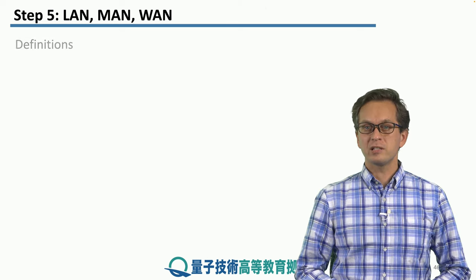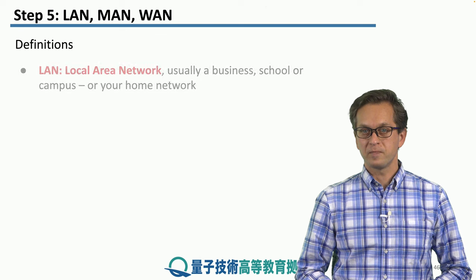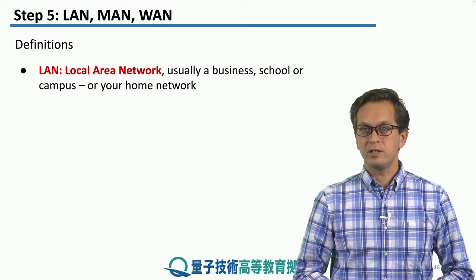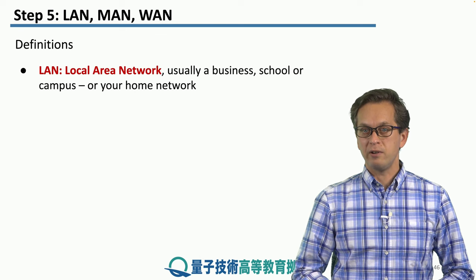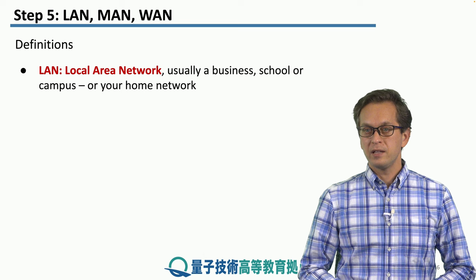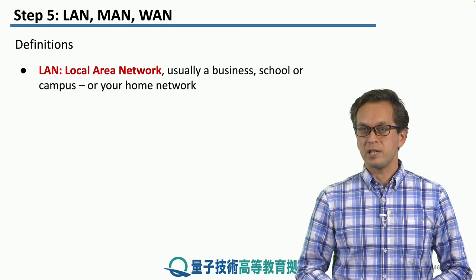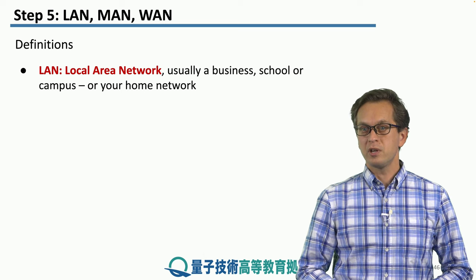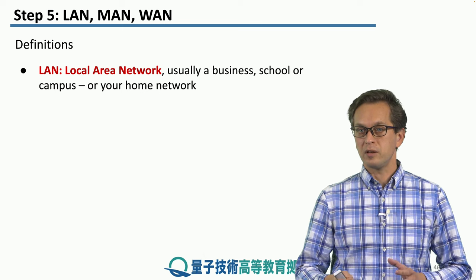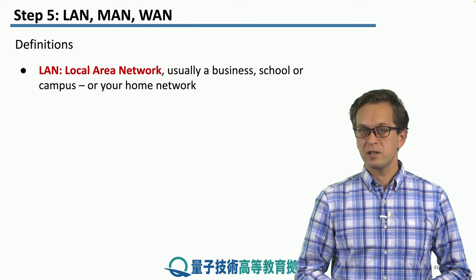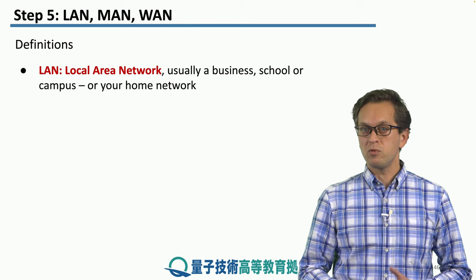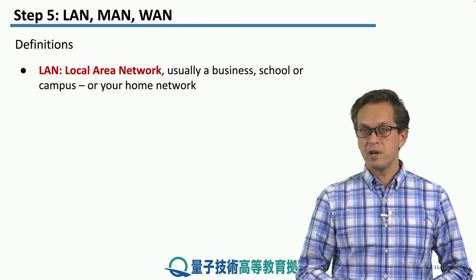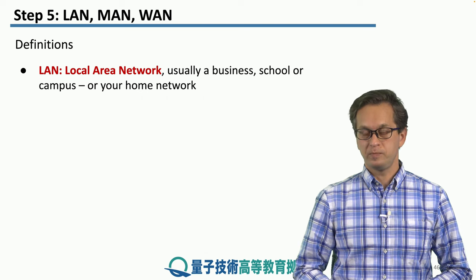So let's look at some definitions. First, we have the Local Area Network or LAN. These are the smallest types of networks and usually they're used to connect computers or end nodes in a business, or in a school, or a university campus, or even in fact in your home.